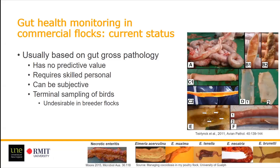At the moment, gut health monitoring in commercial flocks is based on gut gross pathology, looking at general lesions, signs of inflammation, and digestion of the intestinal content. Some farms have a coccidiosis monitoring program where they score the intestines for different coccidial species and also necrotic enteritis. But mixed infections make it quite tricky to score these lesions, and it requires skilled staff as it can be highly subjective and has no predictive value — once you see the lesions, you already have the problem going on.